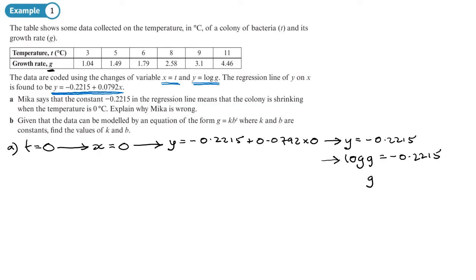If I want to find g, using the rules of logs and changing that to a power, g would be 10 to the power of minus 0.2215. That gives you a growth rate of 10 to the power of negative 0.2215, and we end up with a growth rate of 0.6005.